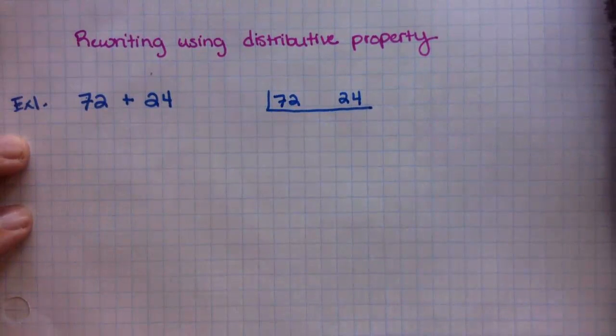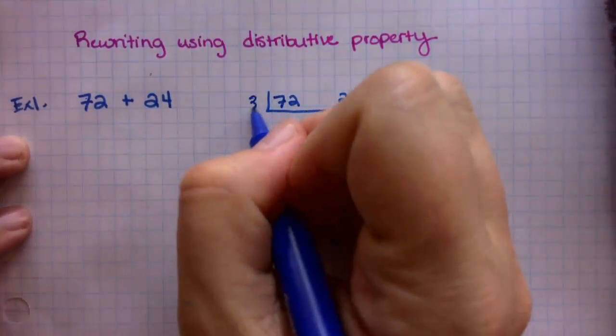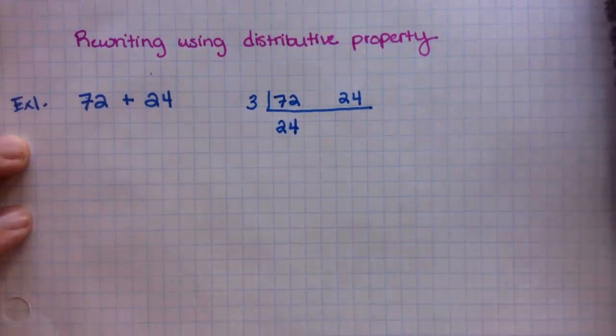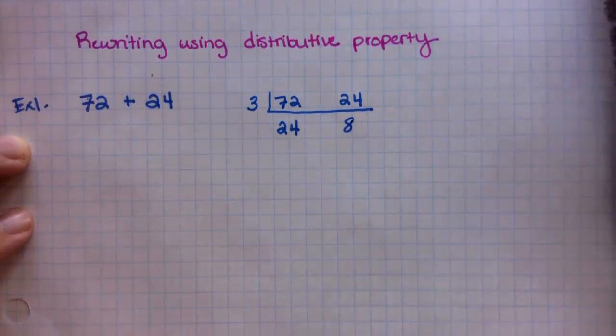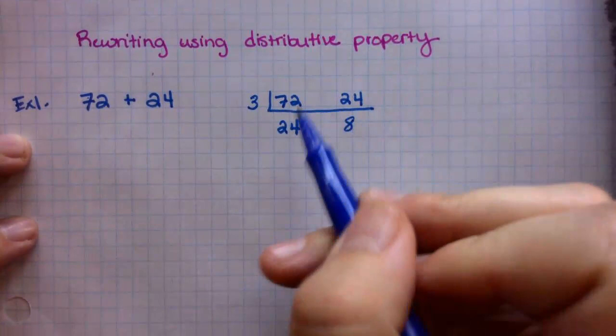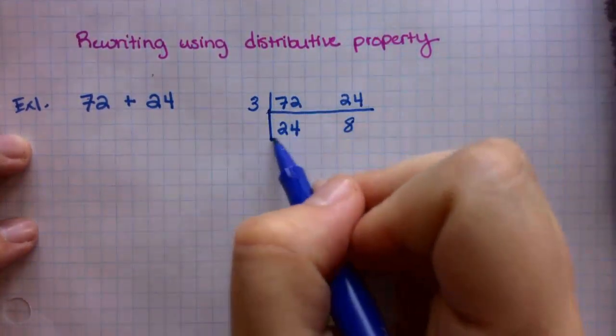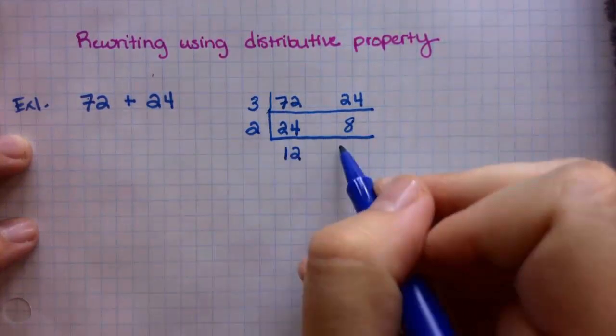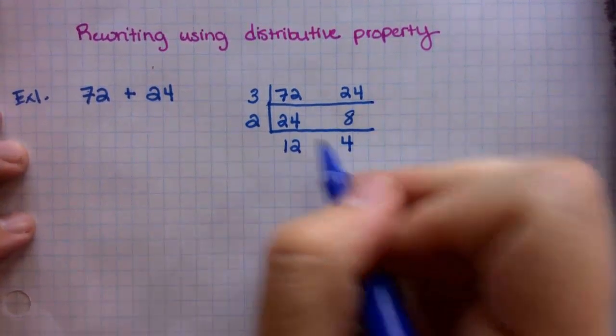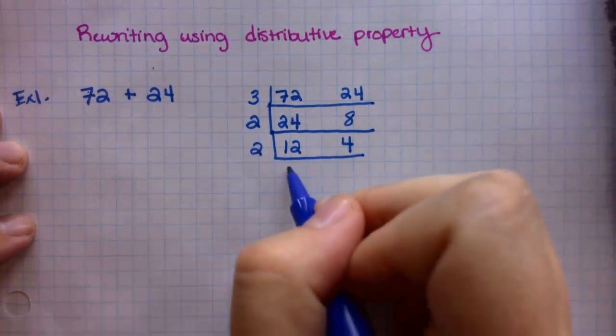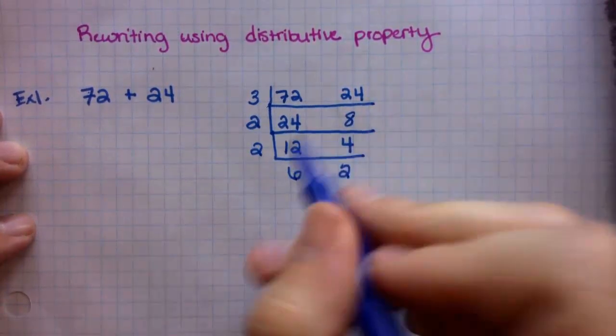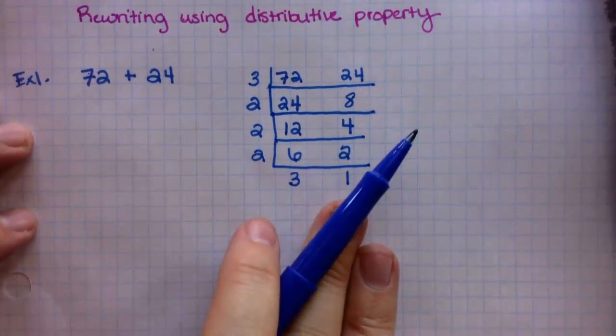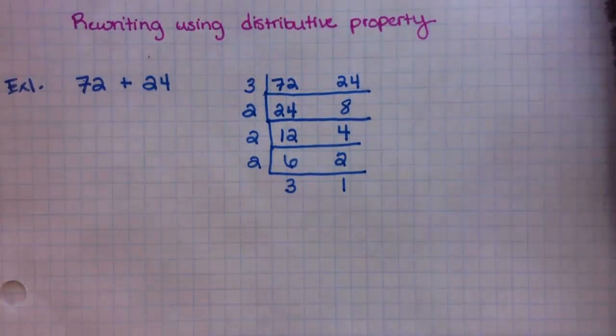So 72 and 24. Just like we've done, I need a prime factor that goes into both. The first one I'm thinking of is 3. So 72 divided by 3 is 24, and 24 divided by 3 is 8. Now I'm going to look at my ladder. Is there a prime factor that goes into 24 and 8? Yes, they're both even numbers, so I'm going to choose 2. 24 divided by 2 is 12, 8 divided by 2 is 4. We can keep going, we still have even numbers. 12 divided by 2 is 6, 4 divided by 2 is 2. And we're going to go again.